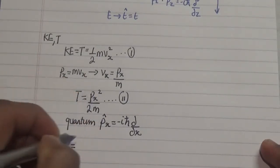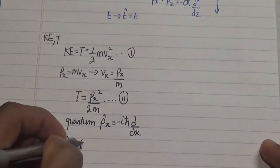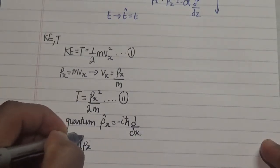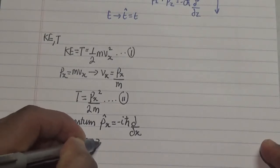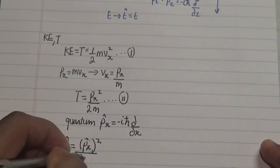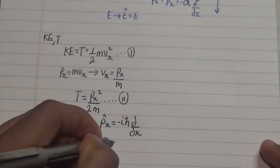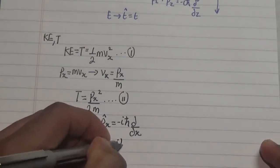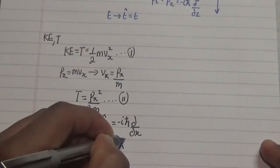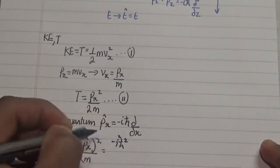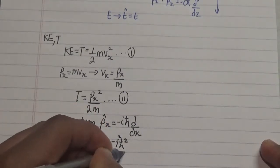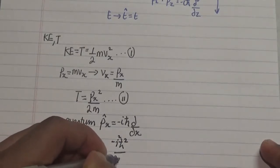What we get is P or momentum in the x coordinate all squared over 2m is equal to negative i h bar squared, this i is squared as well over 2m.